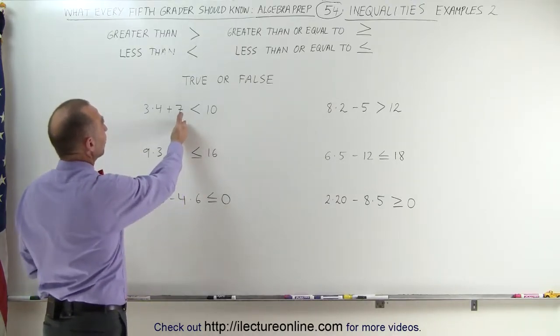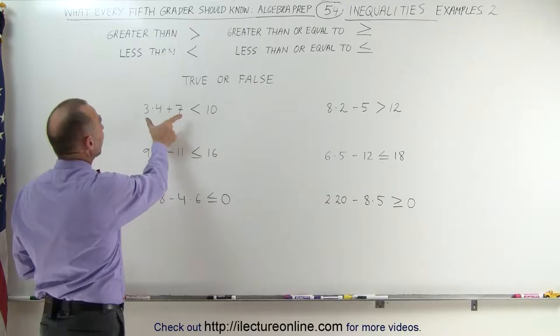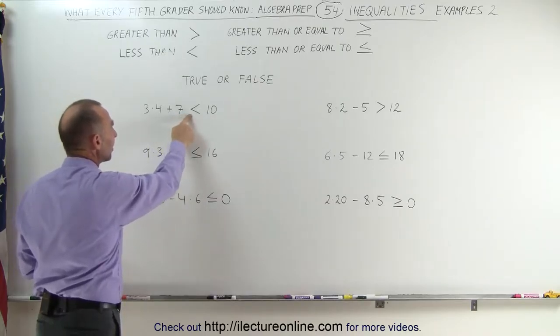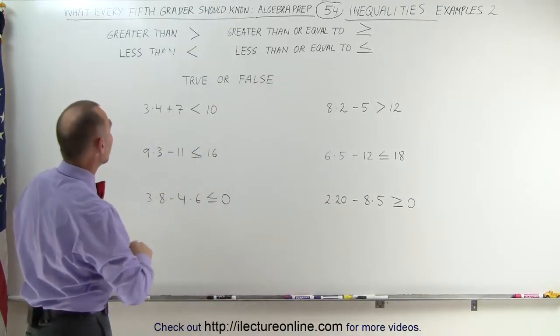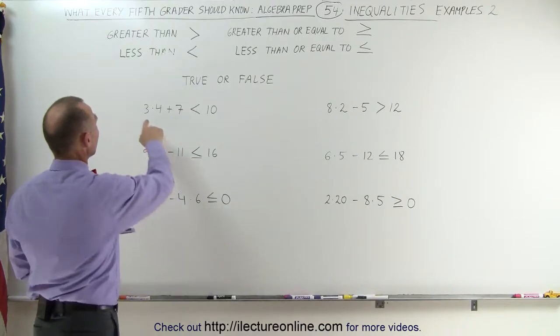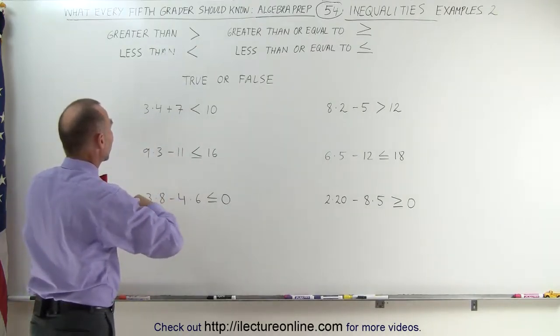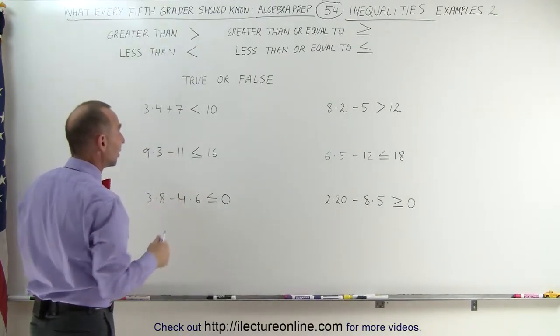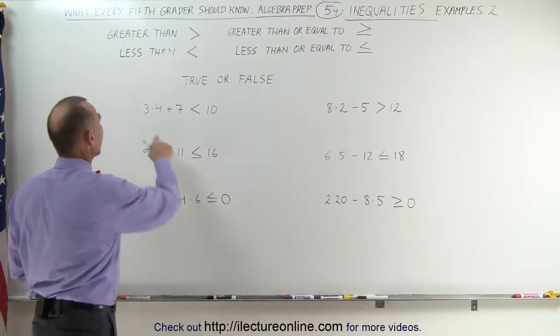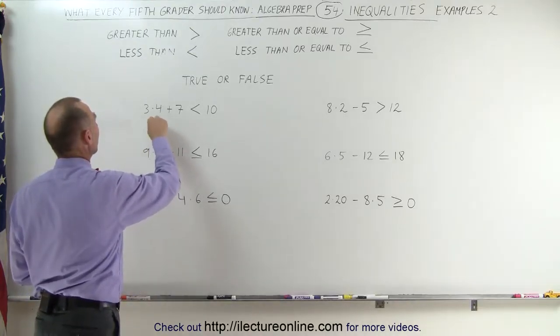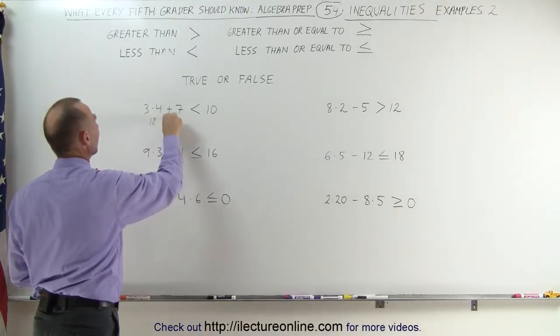What we're trying to determine in this case, for example, is the left side less than 10. Let's go ahead and try it and see what we get. 3 times 4 — we need to do the multiplication first because that's the order of operations principle: multiplication before addition. 3 times 4, that's 12, plus 7 — is that less than 10? Let's add them together.